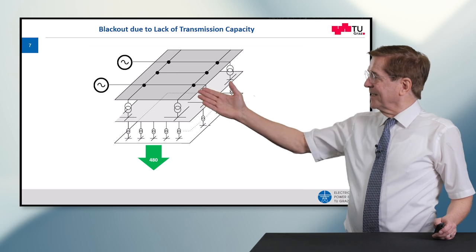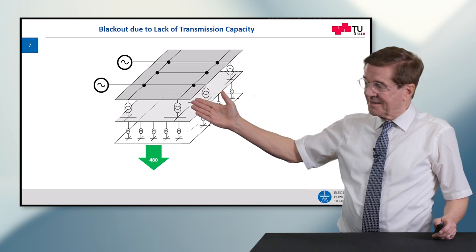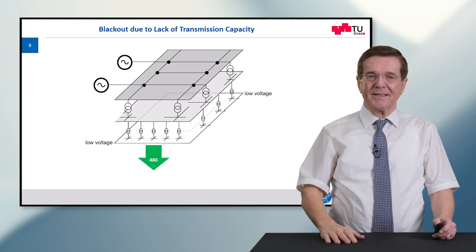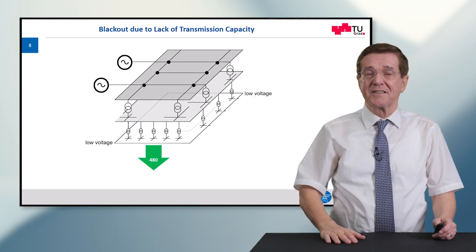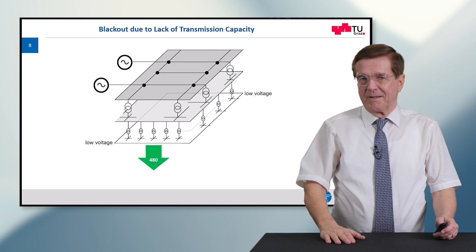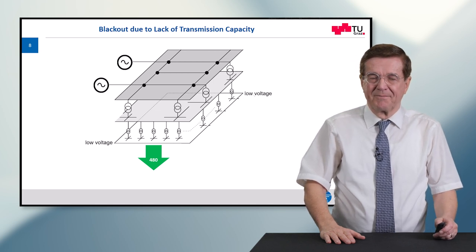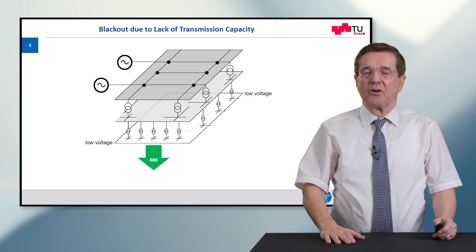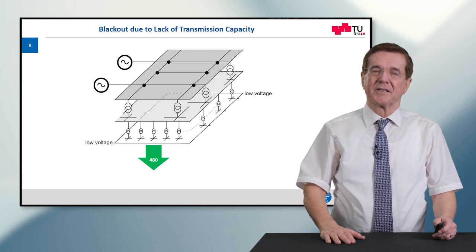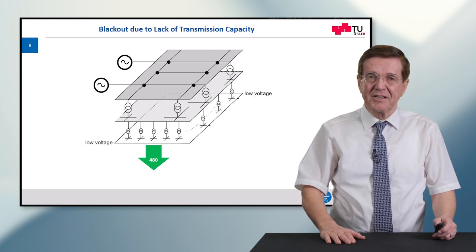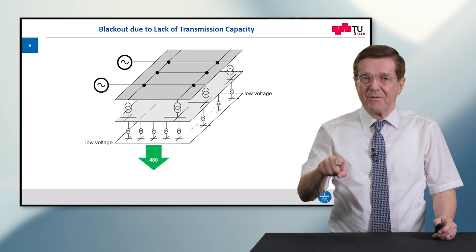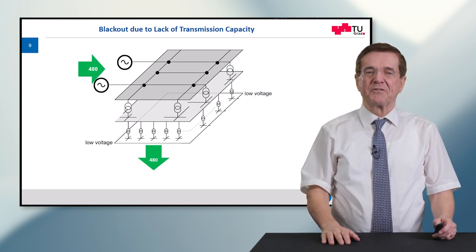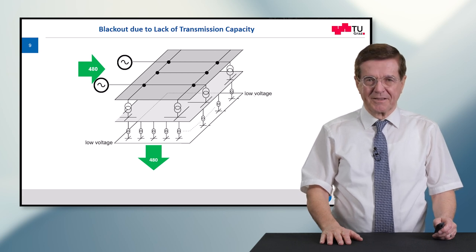Here you can see to my right side an abstracted power system where the consumers, which are at the low end — the low voltage side of this network — consume an apparent power of something like 480 megawatts. In order to keep the balance of power and the law of conservation of energy, we must feed in the same amount of power at the same time from the power stations which feed into the transmission grid.